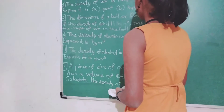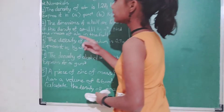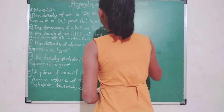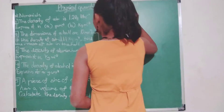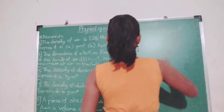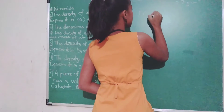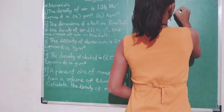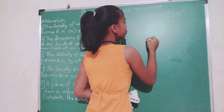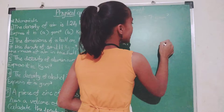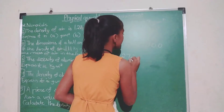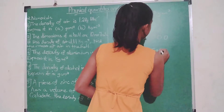The third numerical: the density of aluminium is 2.7 gram per centimeter cube. Express it in kg per meter cube. So, density is 2.7 gram per centimeter cube, and we have to find it in kg per meter cube. We multiply 2.7 by 1000, which gives us 2700 kg per meter cube.